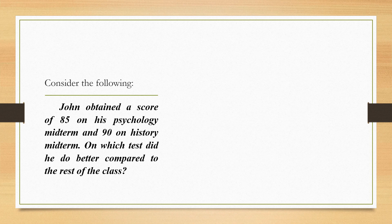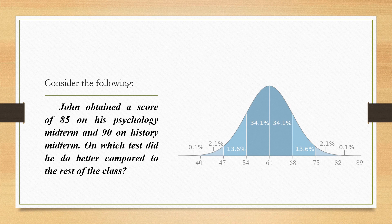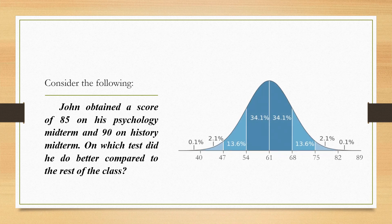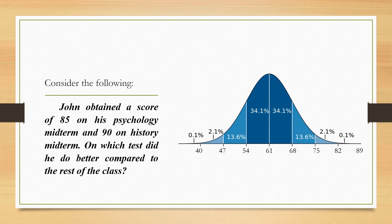The point is that without additional information, we cannot determine which of the scores is higher or lower. The information we have, the raw scores, exists as part of two distributions, one for psychology and one for history. If we can determine where Chan's scores fall in these distributions, we would be able to answer the question. We need information that describes each distribution which are the mean and the standard deviation. Let's add information one piece at a time. First, we add the mean. The mean in psychology is 75 and in history is 140.